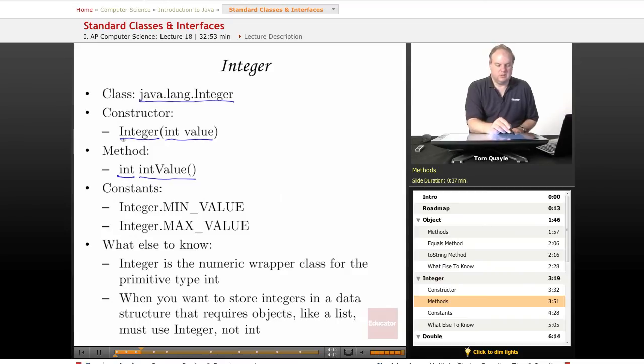So the constructor takes primitive type int and constructs an Integer object. The intValue takes an Integer object and gets you back a primitive type of int. Those are the two things that you need to be able to do with the Integer class.